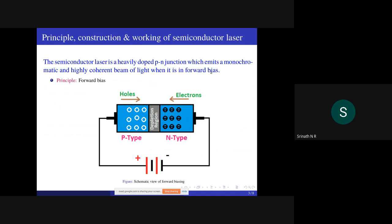The principle of semiconductor laser is forward bias. One can observe the forward biasing of semiconducting material where p-type semiconductor is connected to positive terminal of battery, whereas n-type semiconductor is connected to negative terminal. This is called forward biasing.